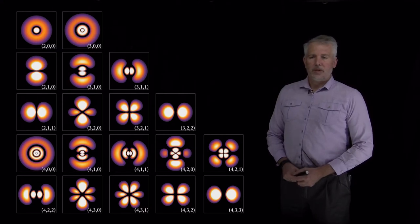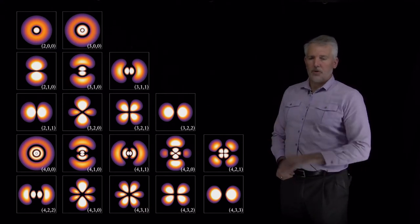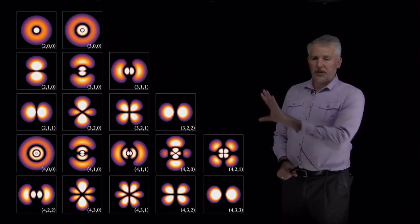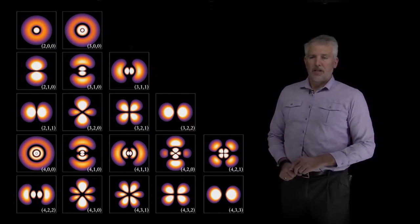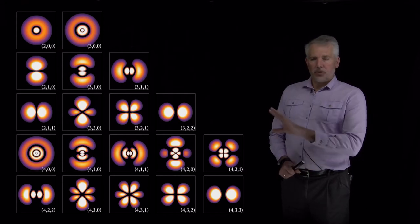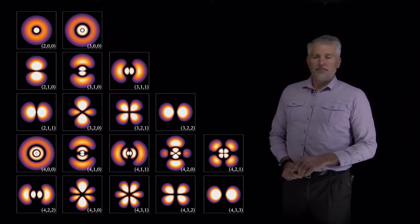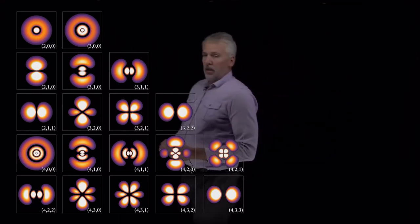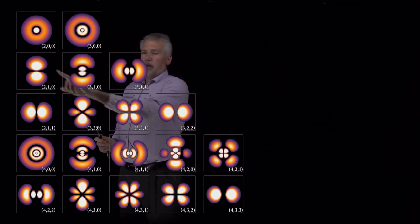All right, so what we'll do in this video is illustrate some more drawn-to-scale pictures of what these wave functions look like. The pictures you see on the side here are actual mathematical representations of the probability of finding electrons around an orbital. So each one is labeled with their quantum numbers.